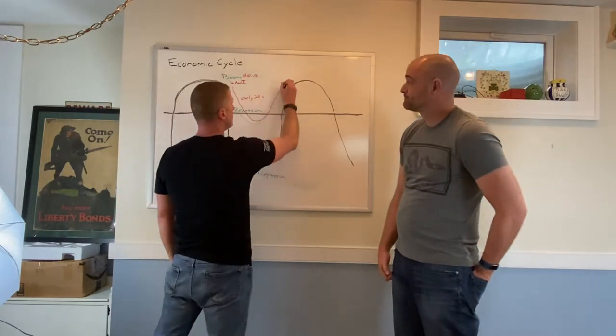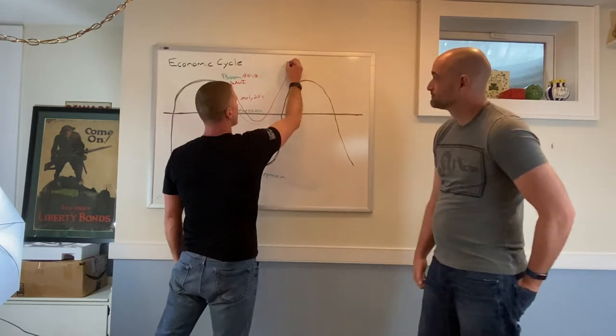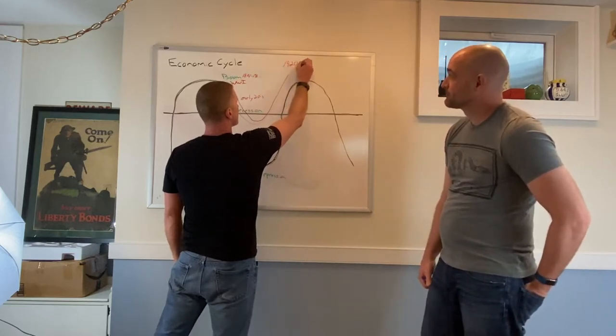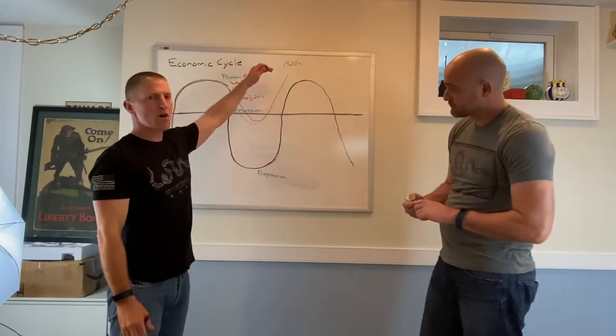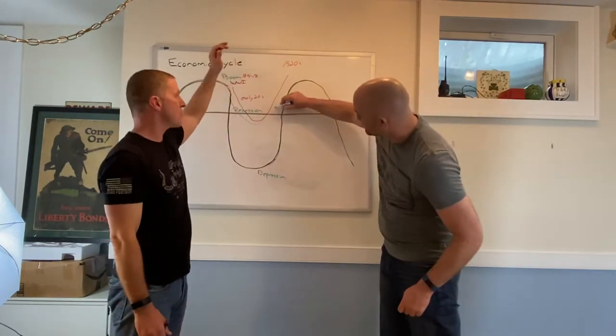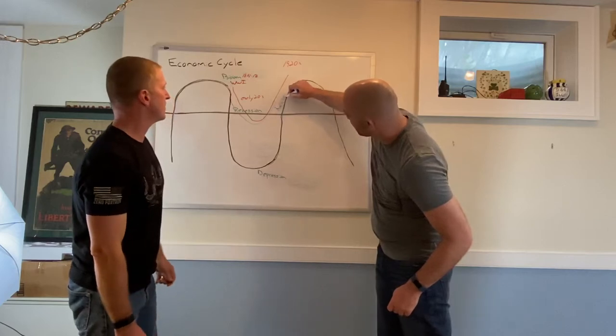But then, boom, we go up. And of course, you know, historians and economists can go, all right, well, you know, we were in a boom, but this can often be debated because a lot of it was purchased on credit. This is called a recovery. Recovery is beautiful.